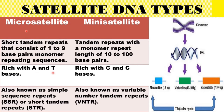Microsatellites consist of a short tandem repeat, whereas minisatellites consist of a tandem repeat. In the case of a short tandem repeat, the monomer repeating sequence is one to nine base pairs, whereas the tandem repeat monomer repeat length is 10 to 100 base pairs.